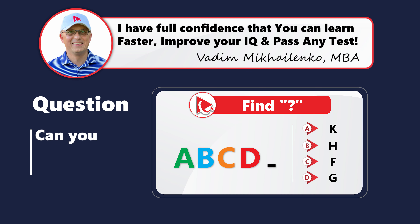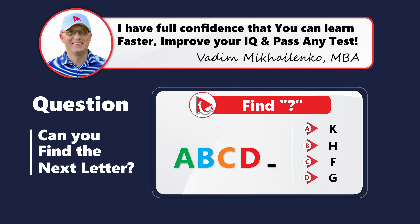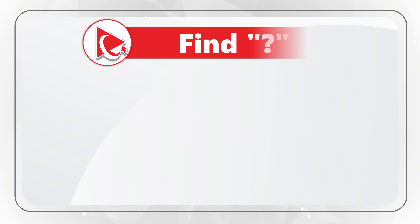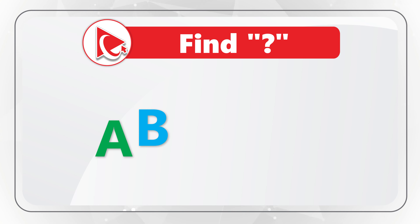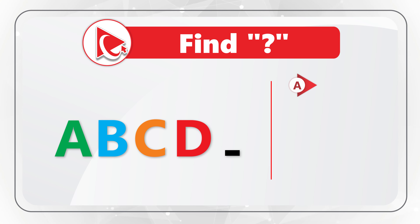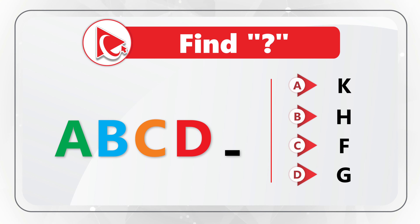I love this question just because the answer is so unusual. You need to determine the next letter in the sequence. The sequence is A, B, C, D, and then comes the missing letter. You need to select the letter out of four different choices: K, H, F, and G, matching choices A, B, C, and D. The answer is very obvious, but only if you know it — or guess it, as we would have to do in our case.